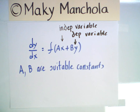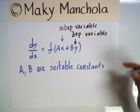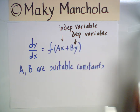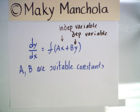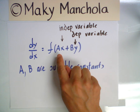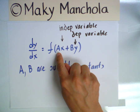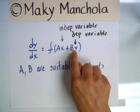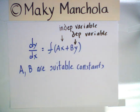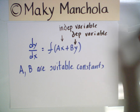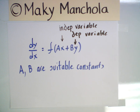What we want to do is solve this differential equation, and we do so by making a substitution. We let ax plus by be our dependent variable, and we rename it v.